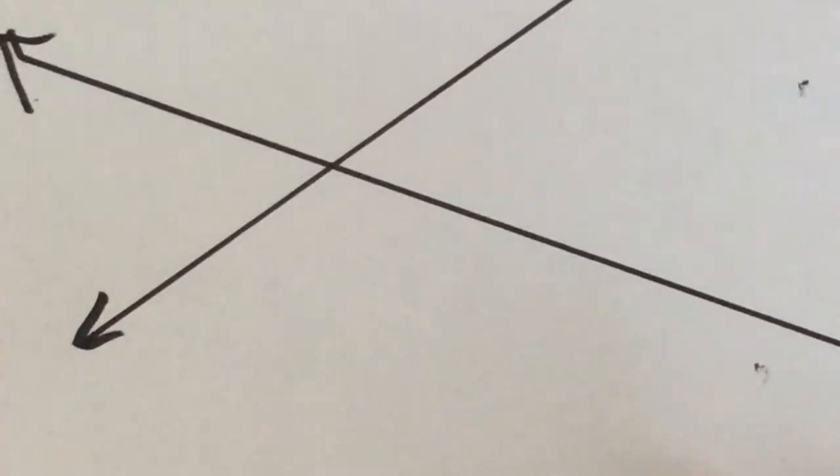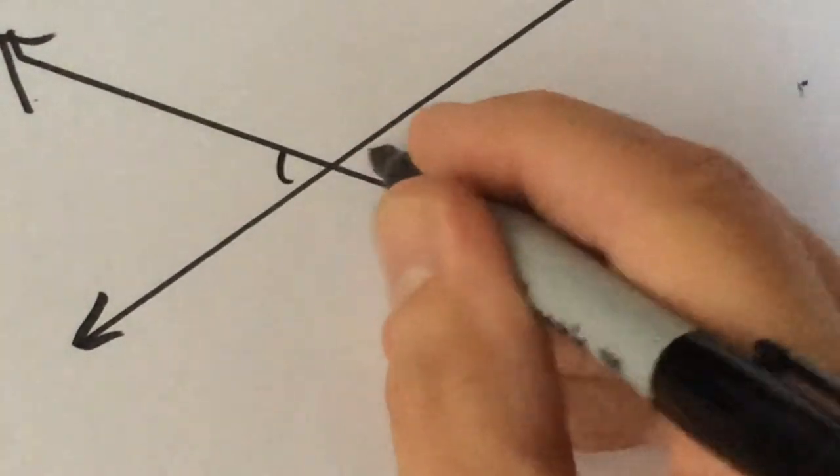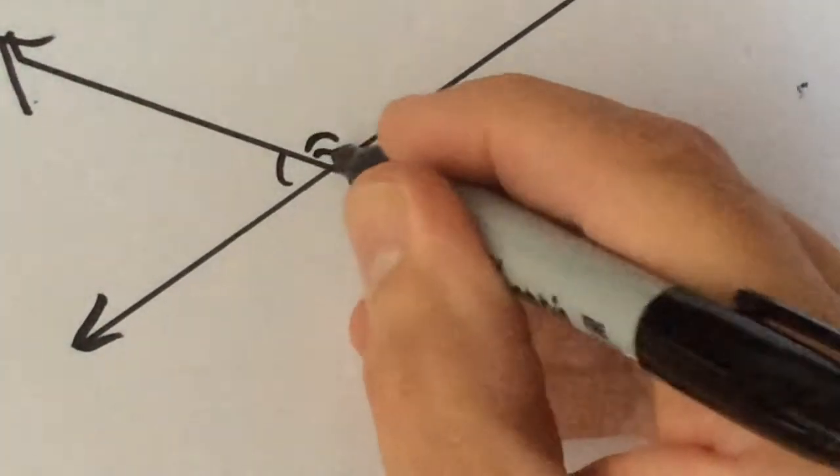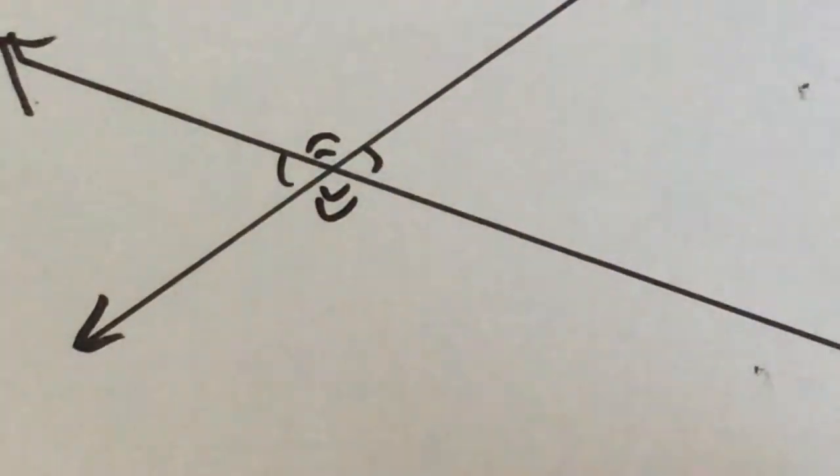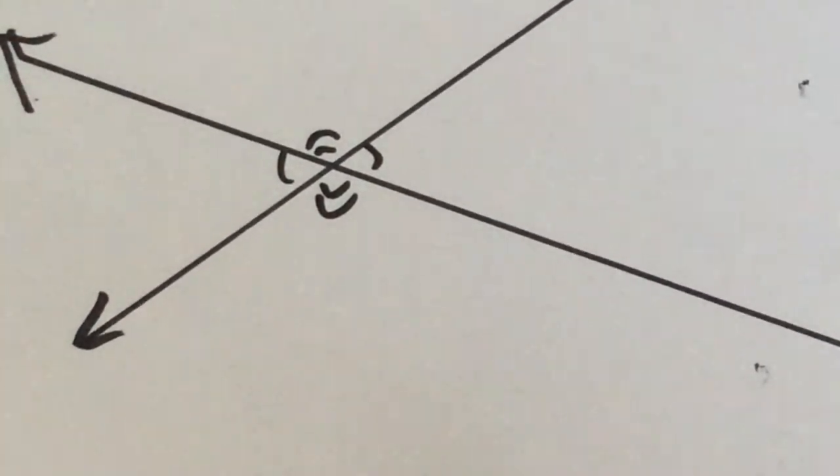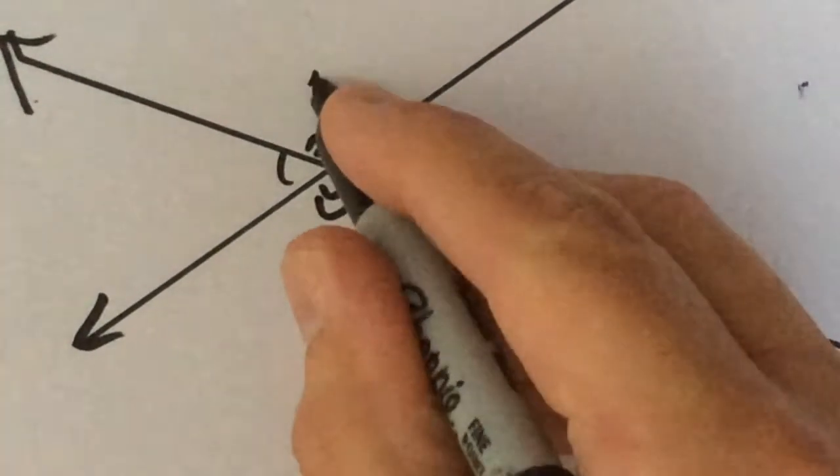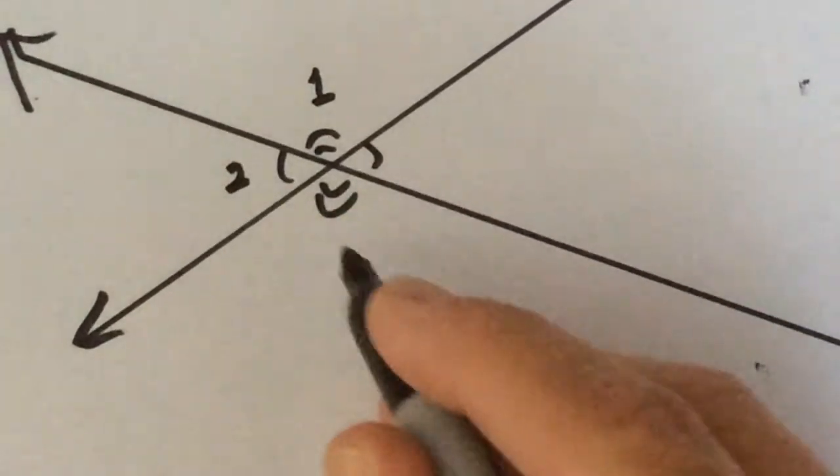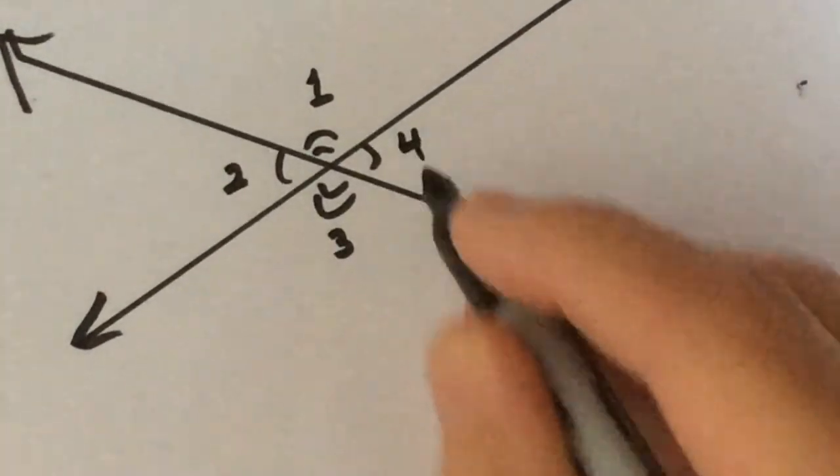What do I know? That there are vertical angles here and here and here and here, right? What else do I know? Let's give these angles numbers. I'm going to call this angle one, two, three, and four.